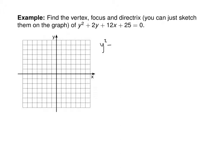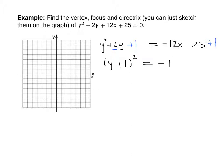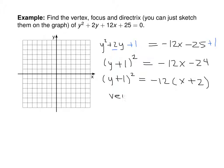Rewrite this as y² + 2y = −12x − 25. Now we add half of the linear term squared coefficient to both sides. Half of 2 is 1, 1 squared is 1, so add 1 on each side. On the left we have (y + 1)², meaning we're going to have a sideways parabola, equals −12x − 24. So (y + 1)² = −12(x + 2). That tells us the vertex is at (−2, −1).